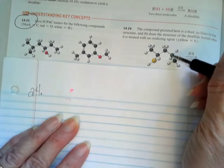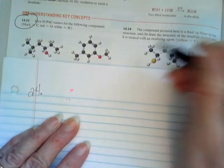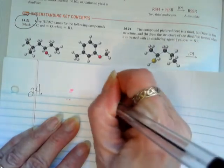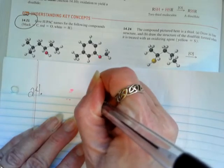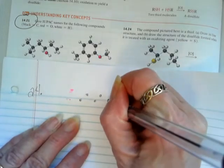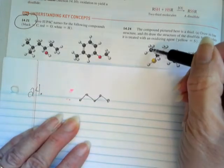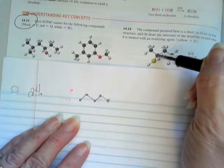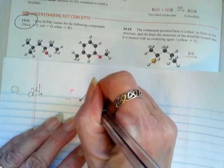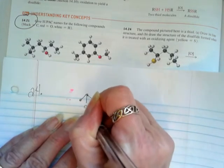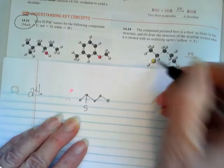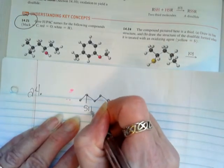Our parent has 1, 2, 3, 4, 5 carbons. So 1, 2, 3, 4, 5 carbons. And off of this second carbon here, I'm going to get an SH.